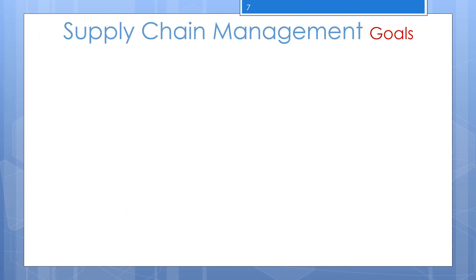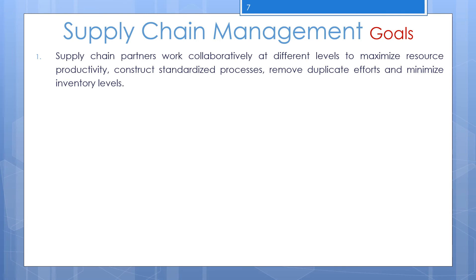What are the supply chain management goals? Supply chain partners work collaboratively at different levels to maximize resource productivity, construct standardized processes, remove duplicate efforts, and minimize inventory levels. Every firm strives to match supply with demand in a timely fashion with the most efficient use of resources.